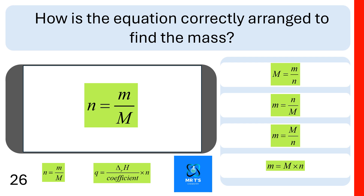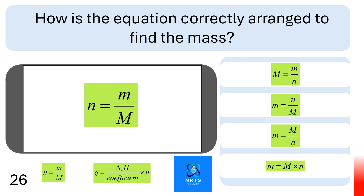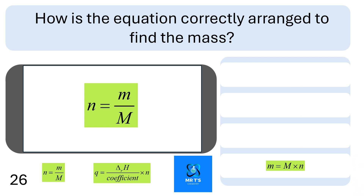Can you identify how the equation should be correctly rearranged to find the mass? Is it the first, second, third, or fourth rearrangement? Which is the correct way to rearrange the equation? The last one is the correct way: mass equals molar mass times moles.